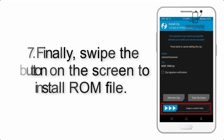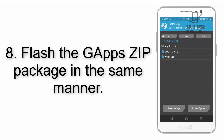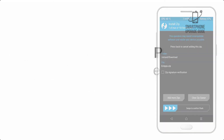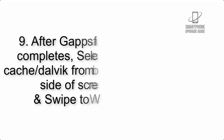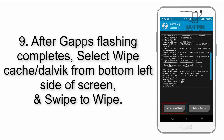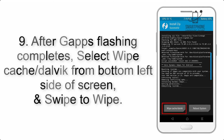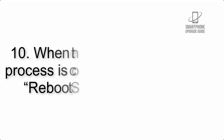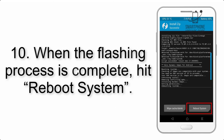Step 7: Swipe the button on the screen to install the ROM file. Step 8: Flash the gapps zip package in the same manner. Step 9: After gapps flashing completes, select Wipe Cache and Dalvik from the bottom left side of the screen and swipe to wipe.